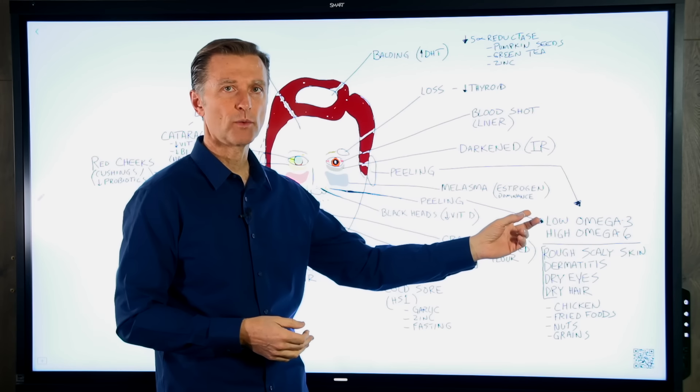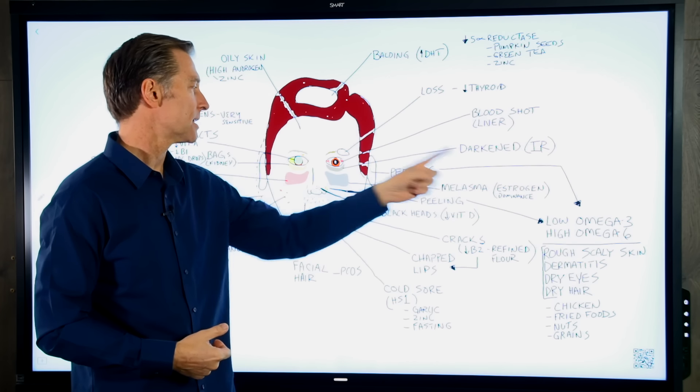So if this is you, what you want to do is you want to take something that can actually oppose that or help clean it up. And DIM is a good remedy, which is a concentrated form of cruciferous. Or start to consume more cruciferous foods. Or iodine in the form of sea kelp can help balance estrogen.